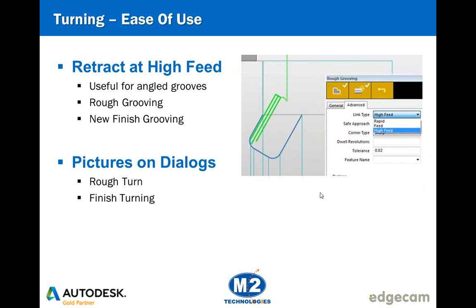On the turning side, there have been a couple of additions. One is that there are now pictures on dialogues for the rough turn and finished turning cycles — as you move through the individual settings of those cycles, the graphic image changes and updates. Those who have already migrated to 2013 R2 noticed some changes to the interface, where cycle dialog boxes now have graphics. It will take some time to update all cycles; at this release the rough turn and finish turning have added those graphics.